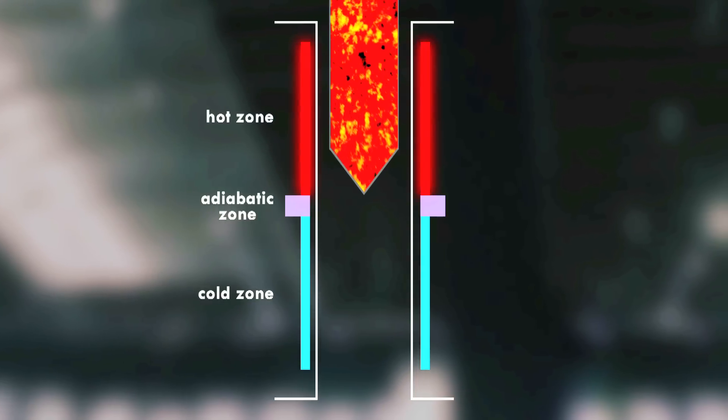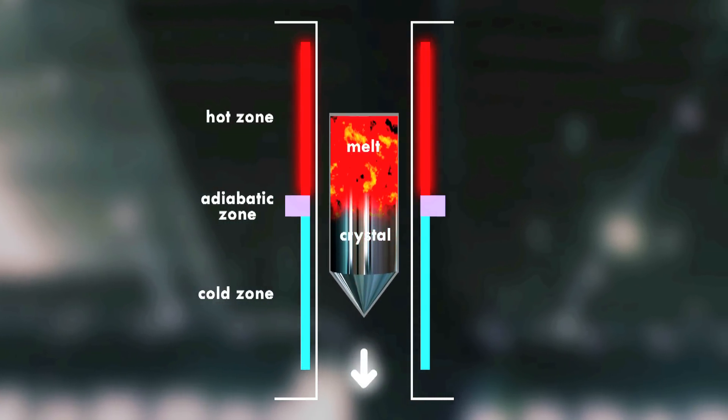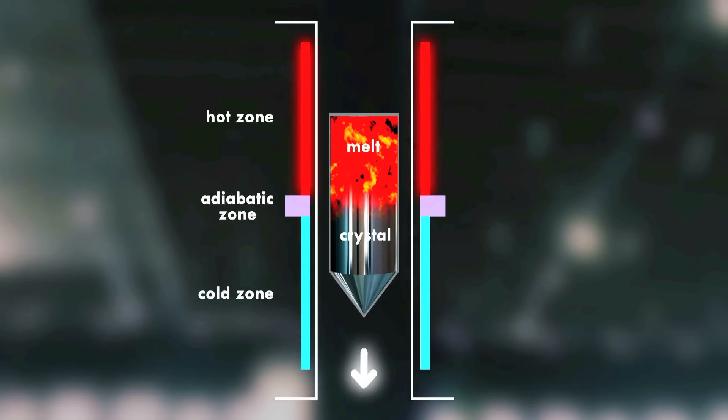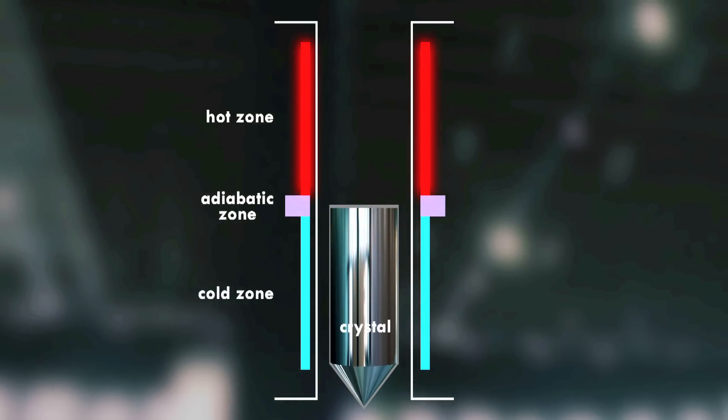The whole thing is molten, but the tip is colder, and so the idea is that it will solidify first in the cone, and then as we withdraw it from the heat zone, that single crystal will be propagated through the whole ingot.